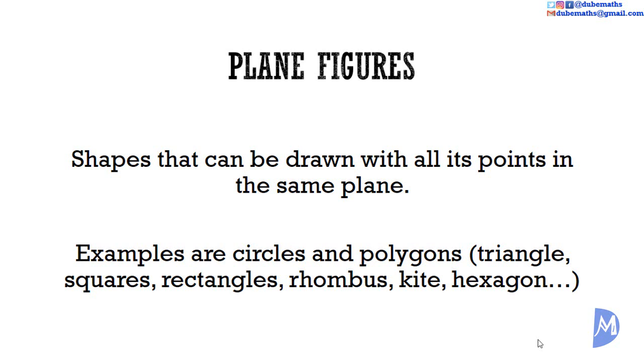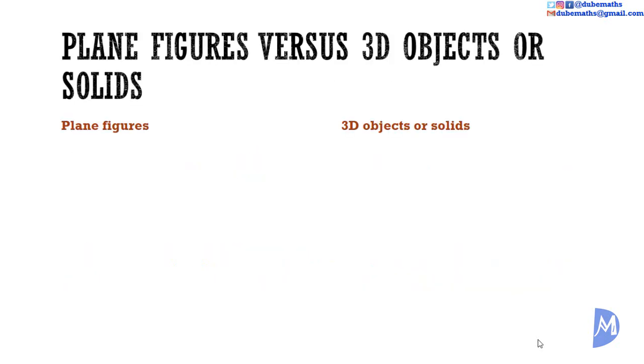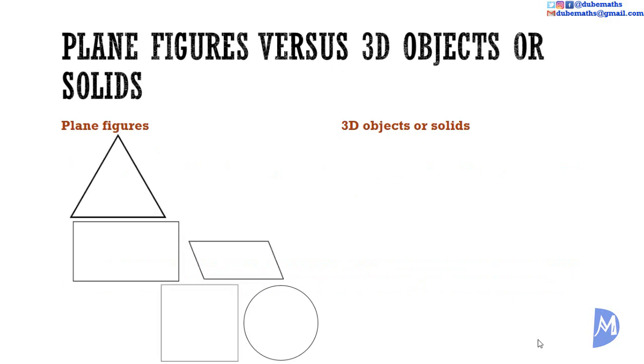To be even clearer, let us separate plane figures from solid figures. Examples of plane figures are circle, square, triangle, rectangle, parallelogram, rhombus, kite,